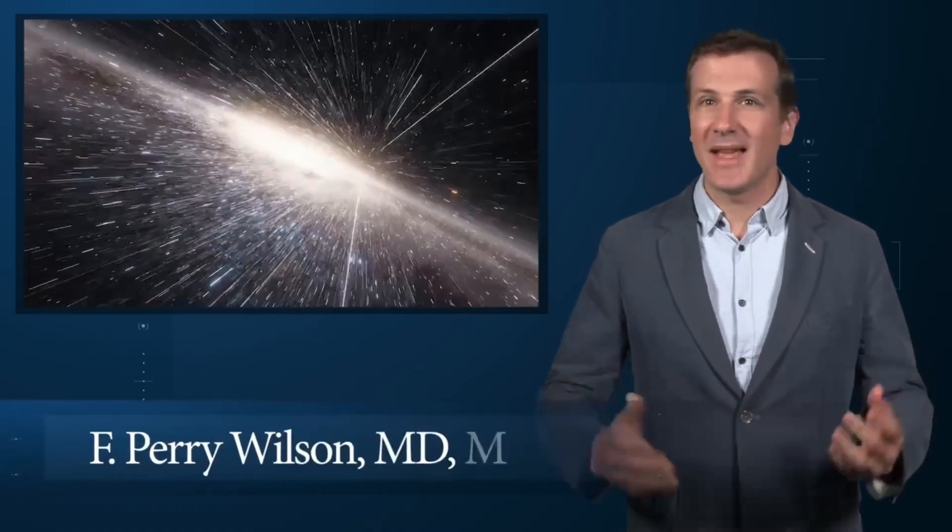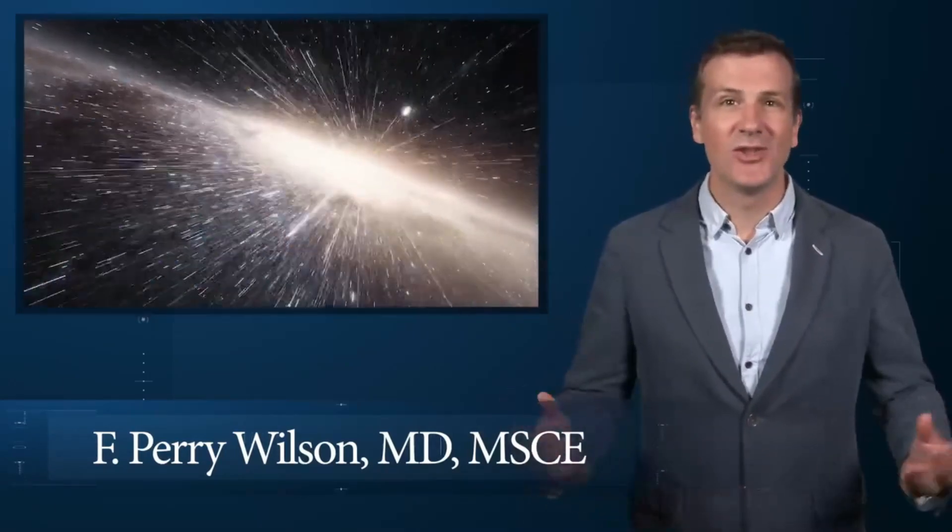Every branch of science has its constants. Physics has the speed of light, the gravitational constant, the Planck constant. Chemistry gives us Avogadro's number, Faraday's constant, the charge of an electron.